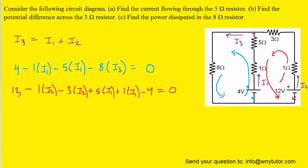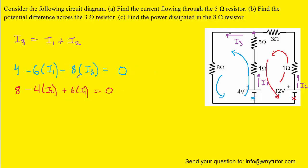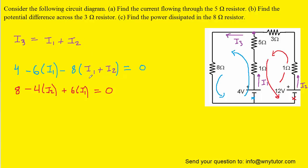We combine like terms in both the blue and red equations. For example, 12 minus 4 gives 8. The I2 terms combine in the red equation, as do the I1 terms in both equations. Now we essentially have an algebra problem with three equations and three unknowns.